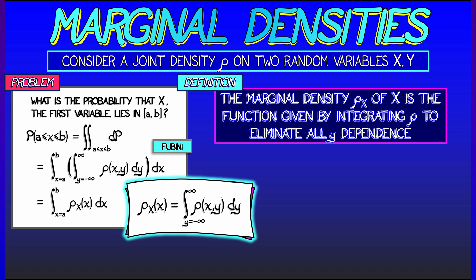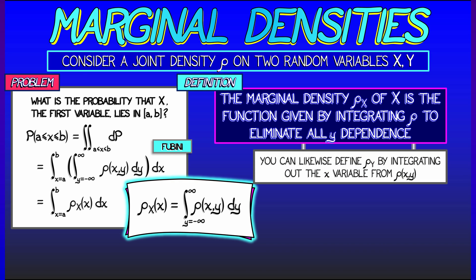Likewise, you can take that joint density function, integrate as x goes from minus infinity to positive infinity, and get a marginal density on y. That is rho sub y.